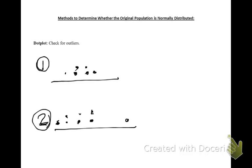The first method would be to use your sample data to create a dot plot. Dot plots that look like the first one would meet the normality assumption, whereas dot plots that look like the second one would not meet the normality assumption because of the outlier here. However, dot plots are not the best method to use to check whether your data is from an originally normal population.